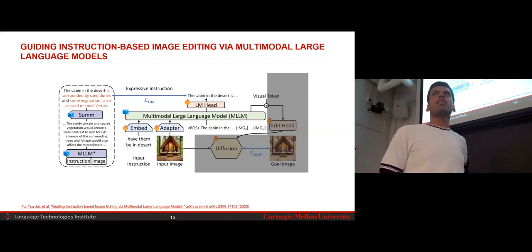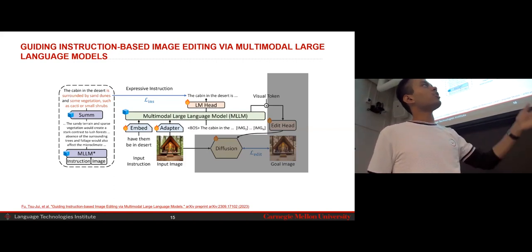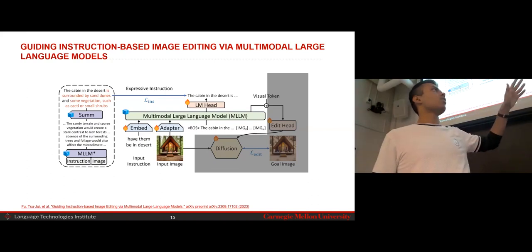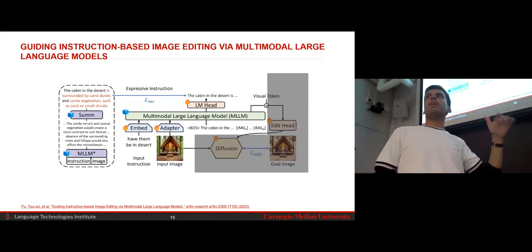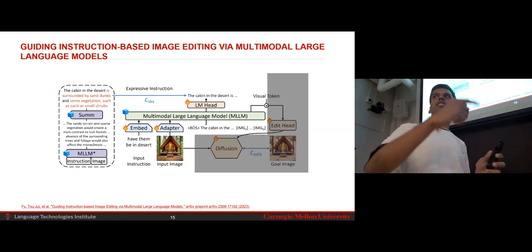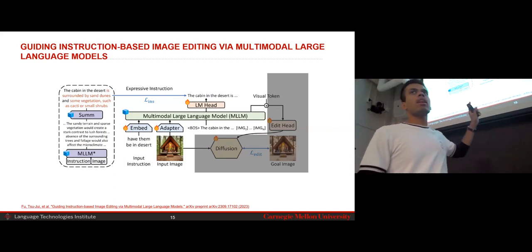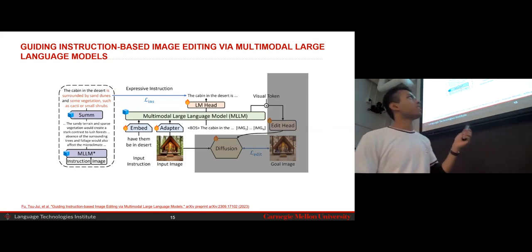Hence, there comes a secondary need to summarize this entire generated text into a more concise version while retaining the information. So therefore, we also use a summarizer. So in the paper, I think they use a FLAN T5-based summarizer to summarize all the details present in it to a final form, which says the cabin in a desert is surrounded by sand dunes, some vegetation, and so on. So, but you might be wondering, why do we have a frozen MLLM here? Because our main goal is not to generate the, not to generate in a cascaded format, these instructions. Rather, we want to train the MLLM to generate these succinct yet detailed instructions in one shot.